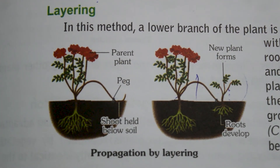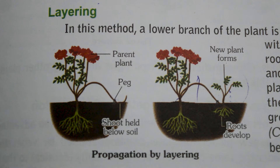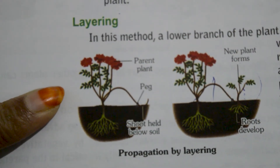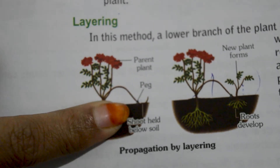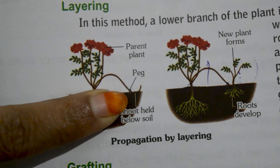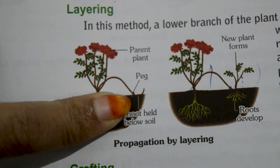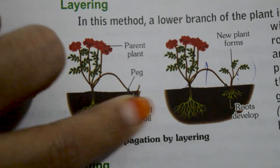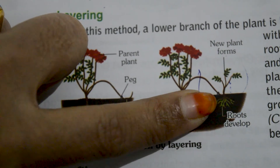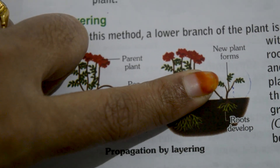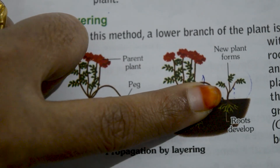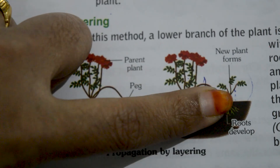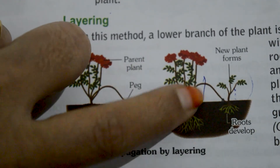The next method is layering. In this method, the branches should be flexible so that the lower branch of the plant is bent into moist soil or into the ground. After some time, roots develop and a new plantlet is produced, which is called a layer. Later, this newly formed plant and the parent plant are separated.